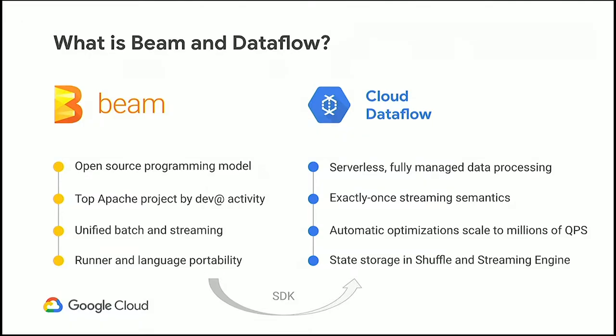Dataflow is a serverless, fully managed data processing option in Google Cloud. Together with Cloud PubSub and Beam, Dataflow offers exactly-once streaming semantics — meaning your messages get processed only once. Dataflow takes care of error handling and data deduplication. We also optimize used resources, not just resources but also the time spent on processing. Lastly, Dataflow offers separation of state storage and compute, which allows us to scale different components of your pipeline at different rates, improving our auto-scaling behavior.